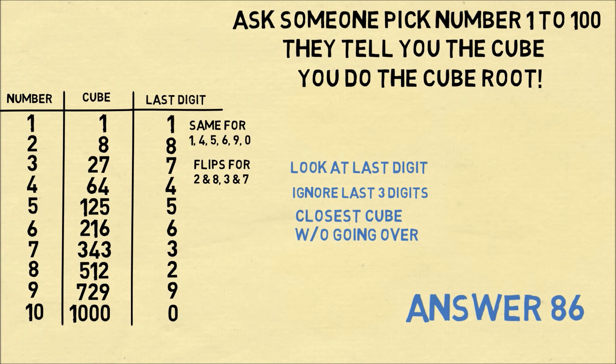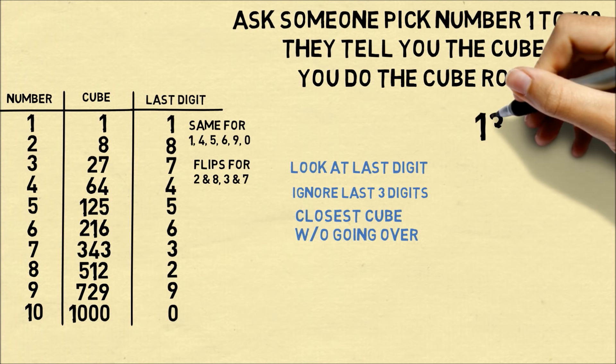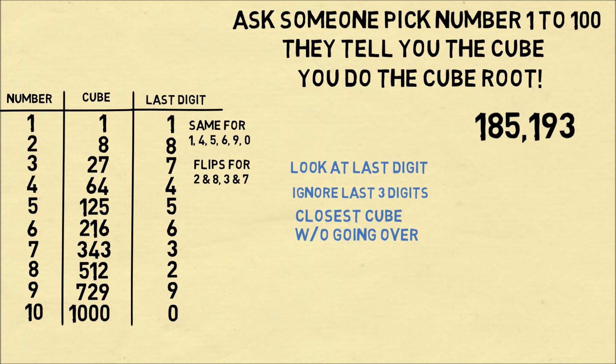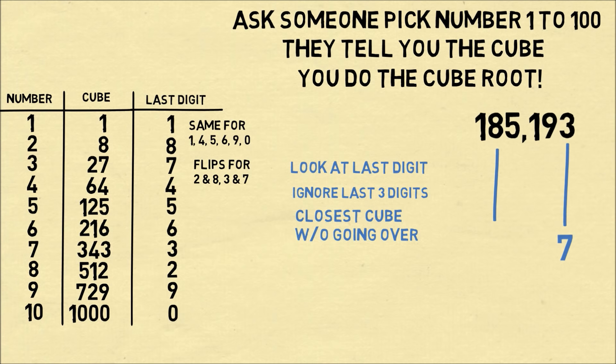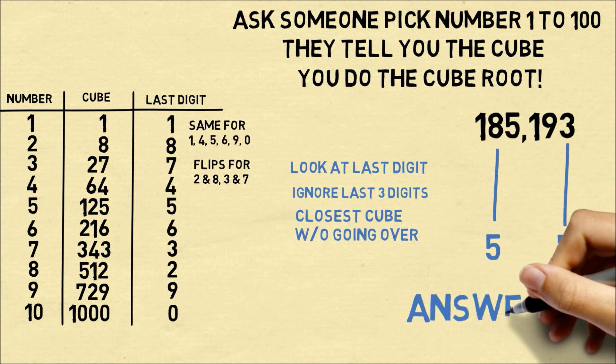Once you memorize this table, you'll be able to do this very quickly. Let's do another example: 185,193. We look at the last digit of 3. That corresponds to the number 7, because 3 and 7 flip. Then we ignore the last three digits, and we look at 185, and that's closest to the cube of 5 without going over. So that gives us the answer of 57.